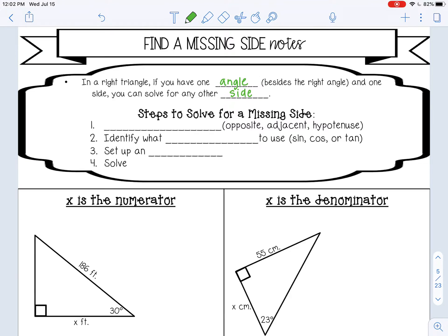Here are the steps. First, you want to label the sides. You label them based on the acute angle that you are given - opposite, adjacent, or hypotenuse. Make a little note: you label them based on the acute angle.